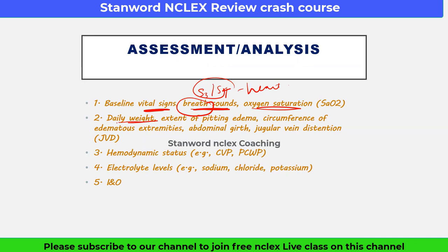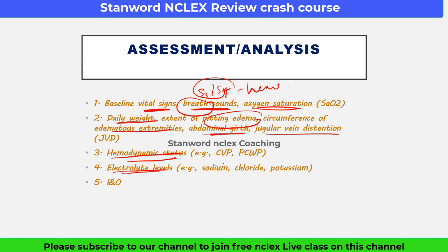We check daily weight because the patient will develop ascites and edema, and we need to check the extent of pitting edema. Circumference of edematous extremities and abdominal girth should be measured to monitor ascites. Jugular vein distension should be checked to assess fluid development in the veins.